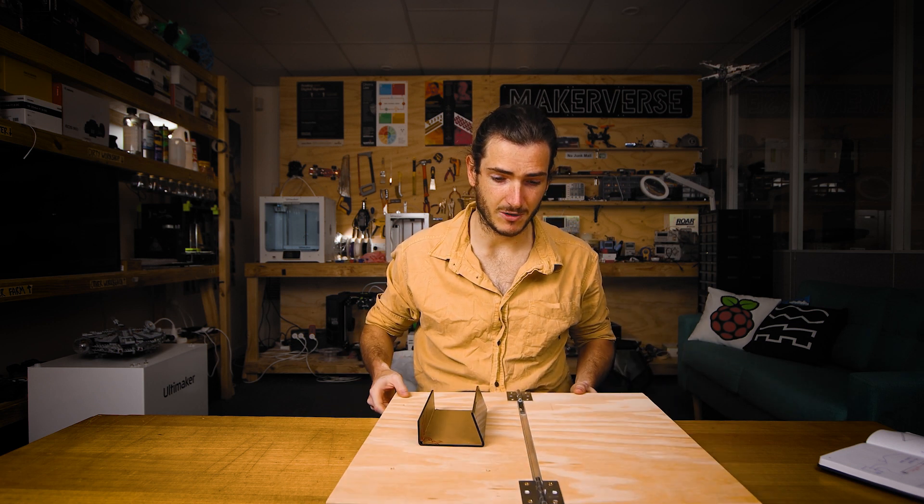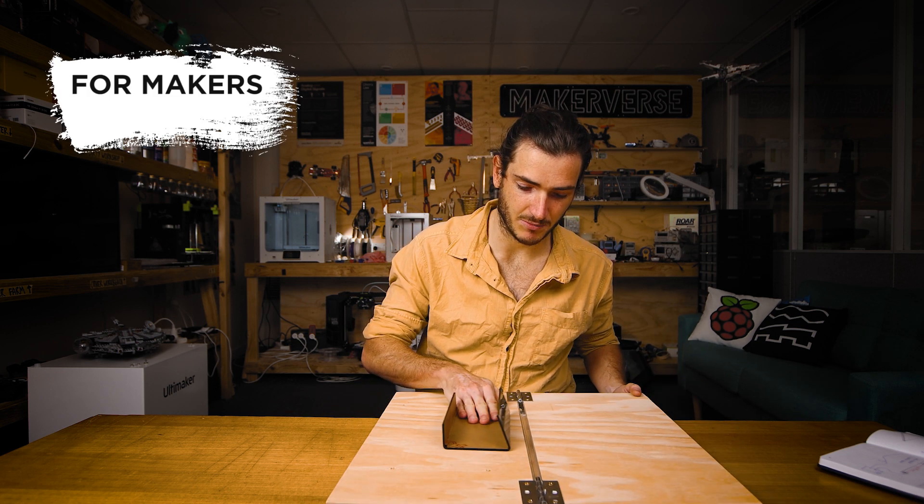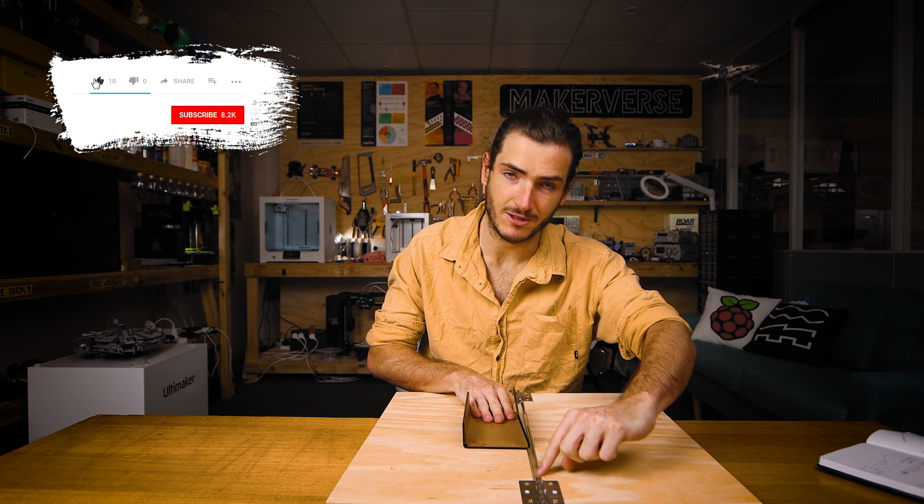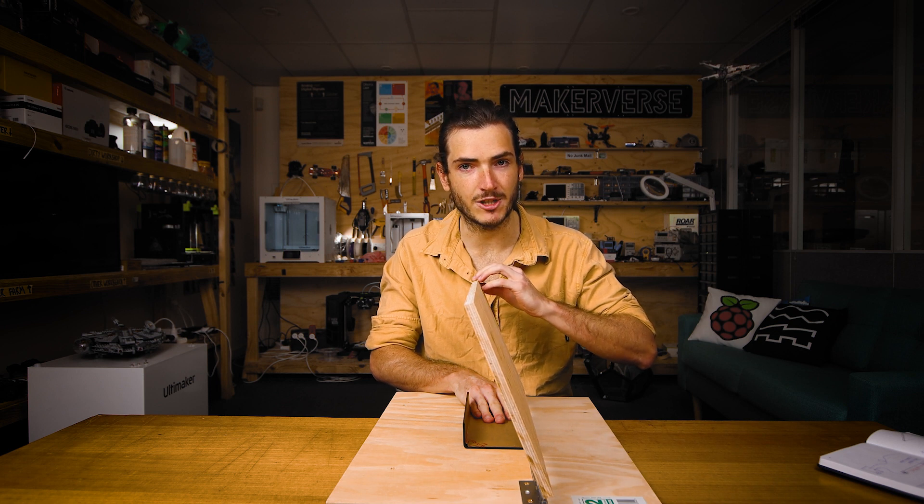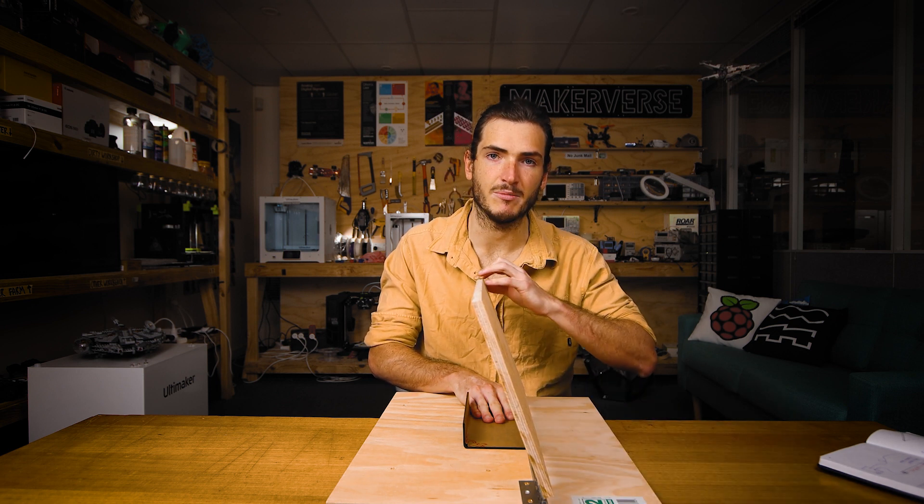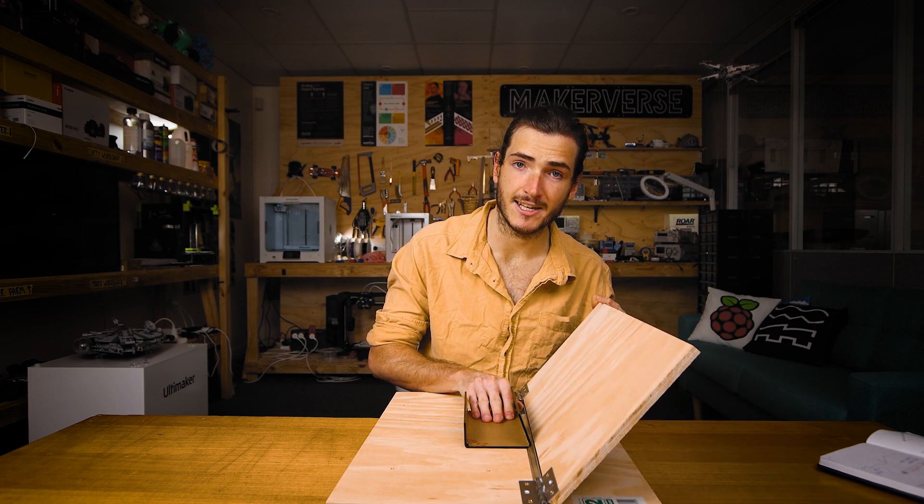This hot wire bender works really simply. You just bring your acrylic up to the hot wire channel that runs down the middle, and after the acrylic reaches temperature you can bend that table back to create your bend at any angle that you need.